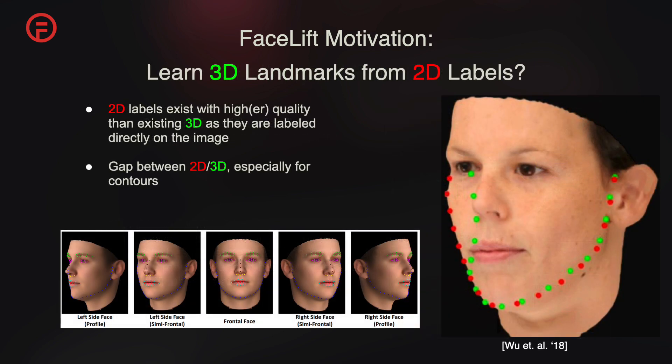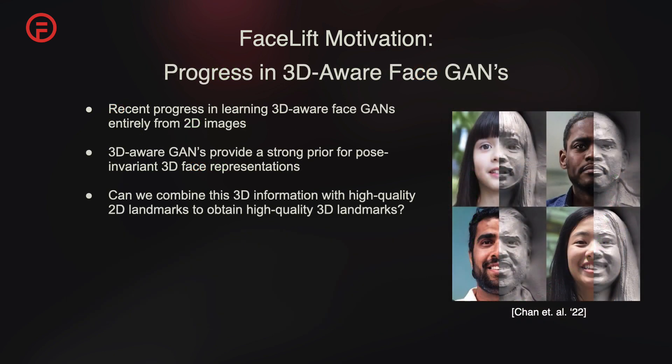Given the high quality of 2D labels, which are directly annotated on images without needing to infer occluded areas, we explore the potential of learning 3D landmarks from these 2D labels. However, there is a gap between 2D and 3D projected labels, as shown in the red vs. green labels to the right. Recent advancements in 3D-aware face scans like EG3D and IDE3D offer a robust foundation for pose-invariant 3D facial representations, setting the stage for our proposed method. We seek to combine this 3D information with high-quality 2D landmarks to obtain high-quality 3D landmarks.